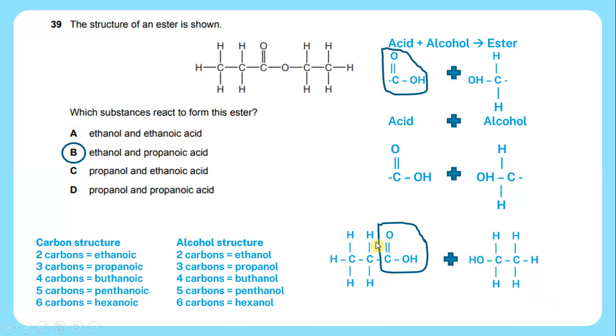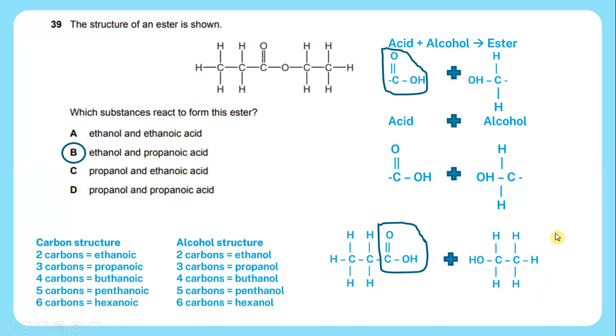In this case, there will be three carbons, so there will be propanoic acid in combination with alcohol to produce an ester. We can say that this is propanoic acid in combination with ethanol to produce water H2O. The answer will be B.